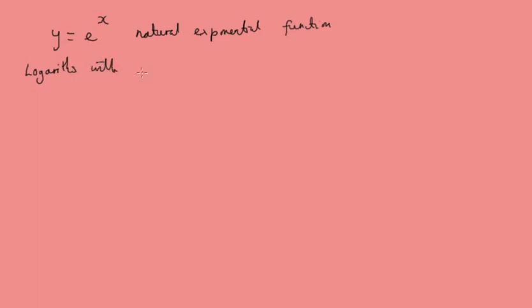Now logarithms with base e are called natural logarithms. So if you've got log base e of x, that's a natural logarithm, but we actually write it in a different way. We write it with big L N for natural logarithms x. So when you see this L N x, it's a natural logarithm, it's a log with the base e.